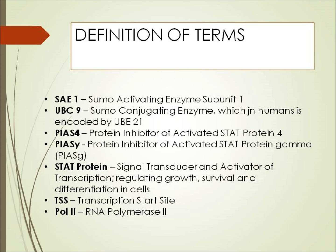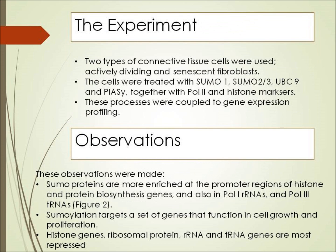TSS stands for transcription start site. Pol2 is RNA polymerase 2. In the experiment, two types of connective tissue cells were used: actively dividing and senescent fibroblasts. The cells were treated with SUMO-1, SUMO-2/3, UBC9, and PRC, together with Pol1 and histone markers. These processes were coupled to gene expression profiling.